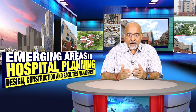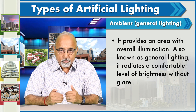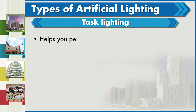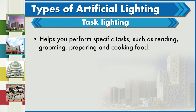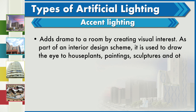Types of Artificial Lighting. Ambient lighting provides an area with overall illumination, also known as general lighting. It radiates a comfortable level of brightness without glare. Task Lighting helps you perform specific tasks such as reading, grooming, and preparing and cooking food. Accent Lighting adds drama to a room by creating visual interest. As part of an interior design scheme, it is used to draw the eye to house plants, paintings, sculptures and other prized possessions.